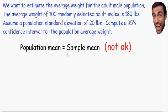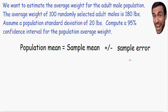Here is where confidence intervals fix this problem for us. It is okay to assume that the population mean, or the population average, is equal to the sample mean plus or minus a sampling error. Here is the formula for a confidence interval: the population mean is equal to the sample mean plus or minus a sampling error.